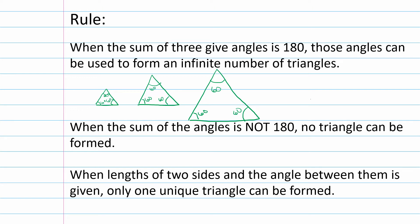We just can't make a triangle if the angles do not add up to 180 degrees. There's a third rule: when the lengths of two sides and the angle between them is given, only one unique triangle can be formed. If I know one side is 3, another side is 4, and the angle between them is 90 degrees, I can't make any other triangle — I can't make it bigger or smaller. There's only one option.